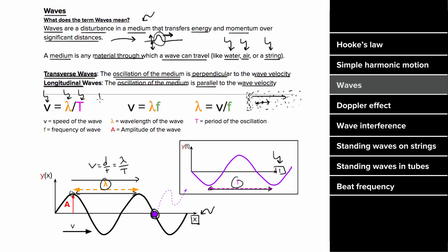Since one over the period equals the frequency, we can rewrite the speed formula as: the speed of a wave equals the wavelength times the frequency. On the AP exam formula sheet, the wavelength equals the speed divided by the frequency. This confuses many people who think increasing frequency increases wave speed — but that's not true. Increasing the frequency causes the wavelength to decrease while the speed remains constant.